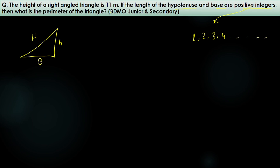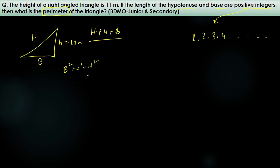We need to find the perimeter, which means summing all side lengths: capital H plus small h plus b. According to the Pythagorean theorem, the square of the base plus the square of the height equals the square of the hypotenuse. We know h equals 11 meters, so: b² + h² = H².